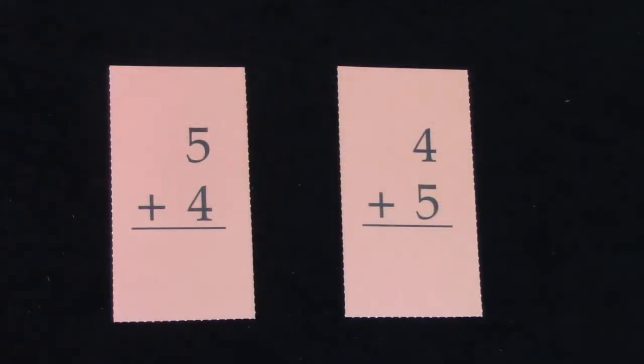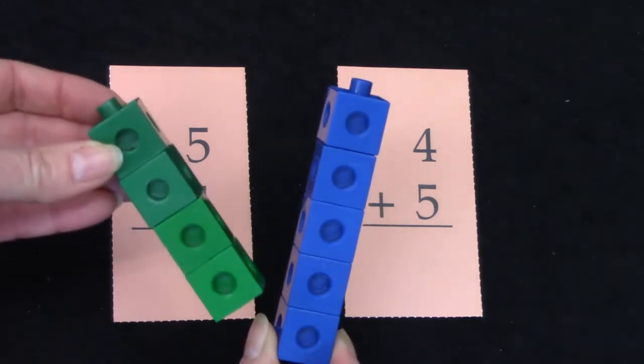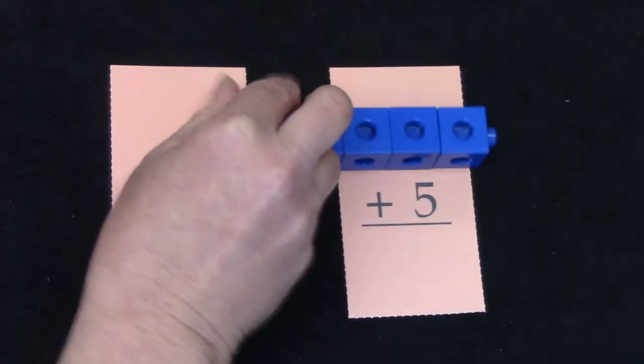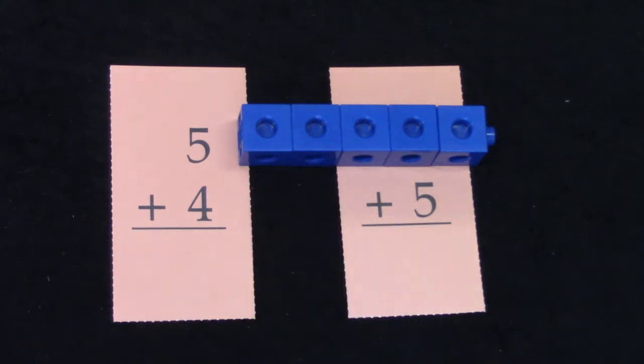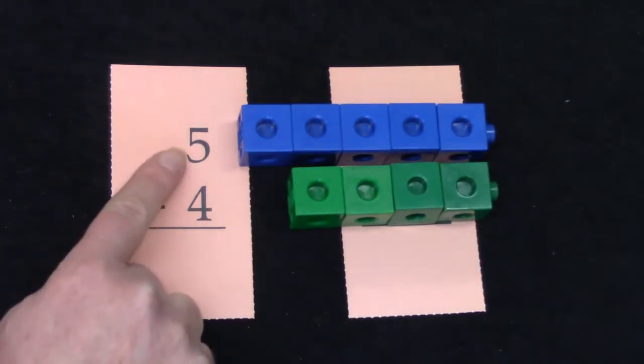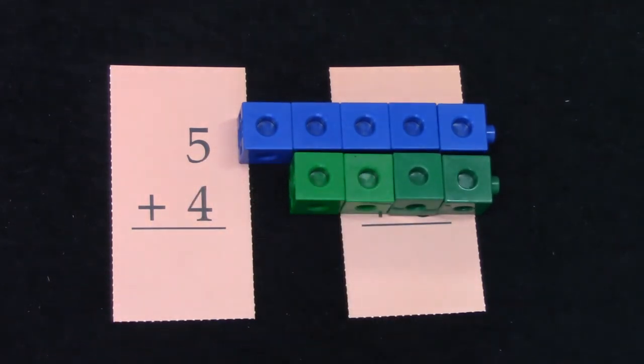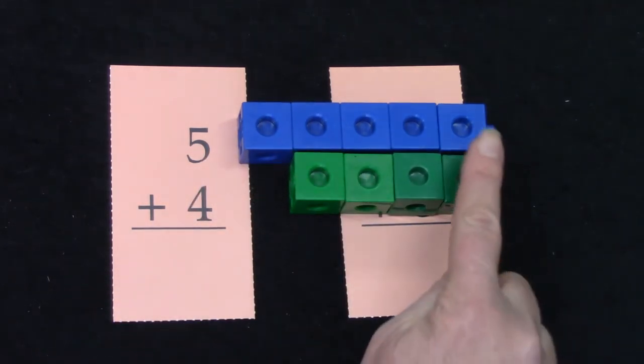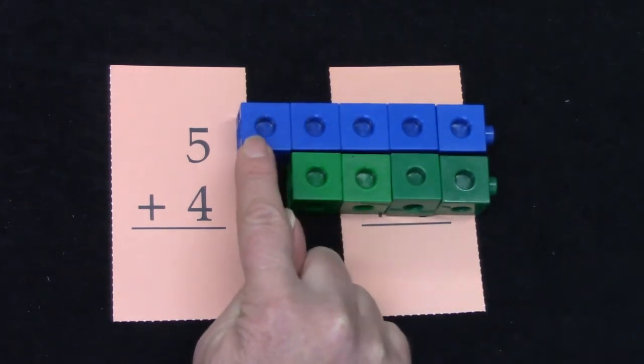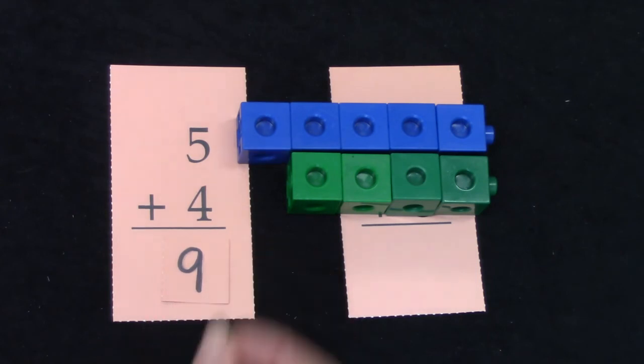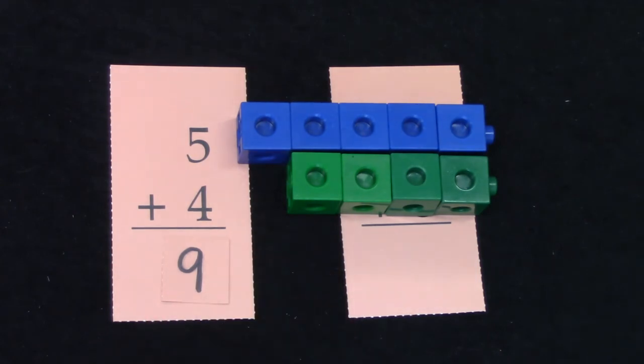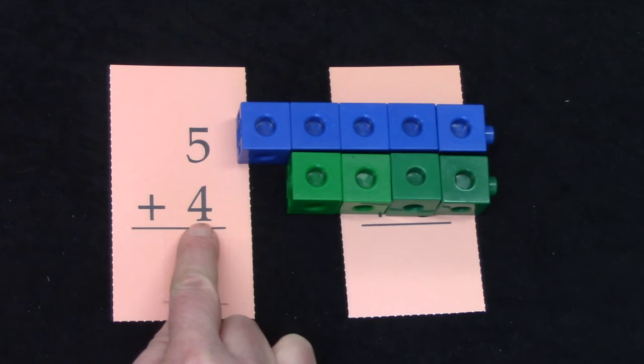5 plus 4 and 4 plus 5, we are adding a 5 and a 4. In this question we have 5 and we are going to add 4 to it. 5 plus 4. Well the one thing that we could do is we could just count them. 2, 4, 6, 8 plus 1 more. 9. Or we could find our smallest number, 4, and we could double it. 4 plus 4 is 8 plus one more. 9.